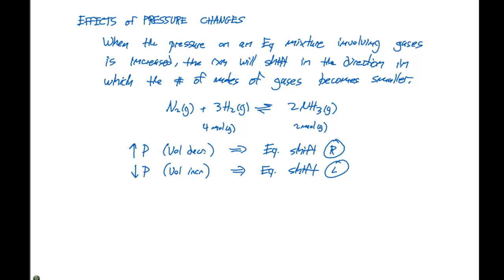If we look at another example, which is PCl₃ as a gas, plus 3NH₃ as a gas, in equilibrium with PNH₃₃ as a liquid plus 3NH₃ as a gas. We need to compare the number of moles of gases on the left-hand side of the equation and then the right-hand side of the equation.